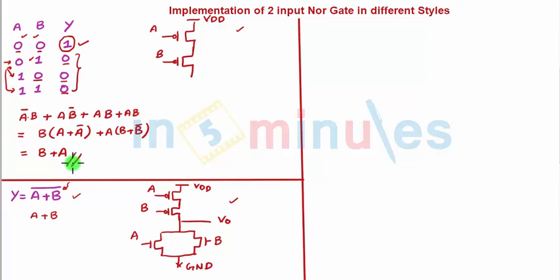So my pulldown comprises of two transistors, one with input B and other one with input A, and both of them are connected in parallel. Pulldown means NMOS is A, B connected in parallel to each other. This is my ground and in between the pullup and pulldown network I get my output VOUT.